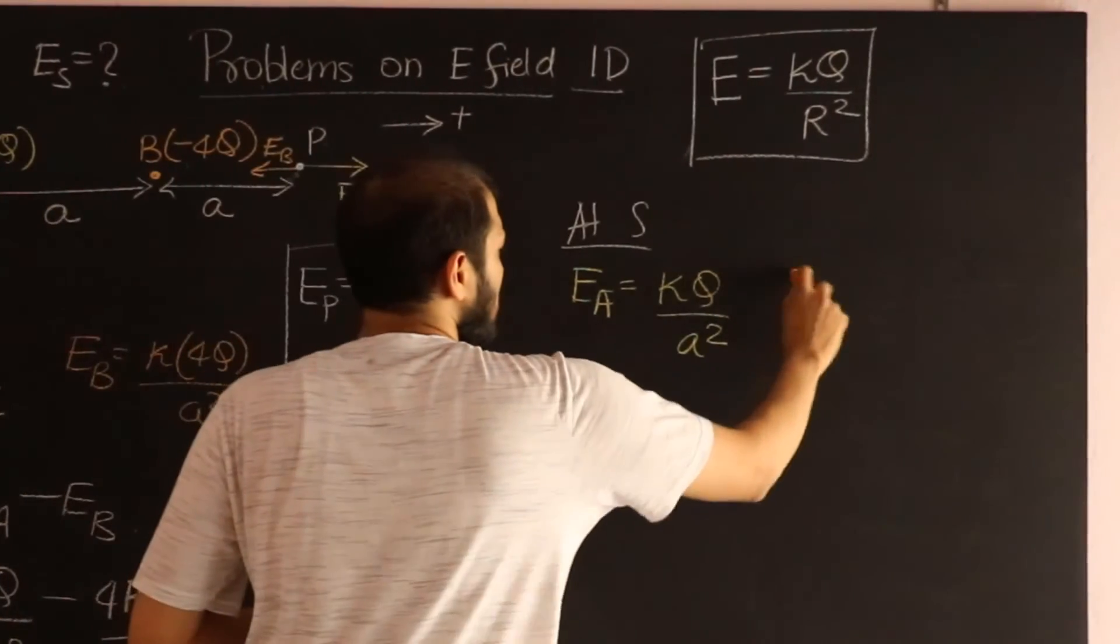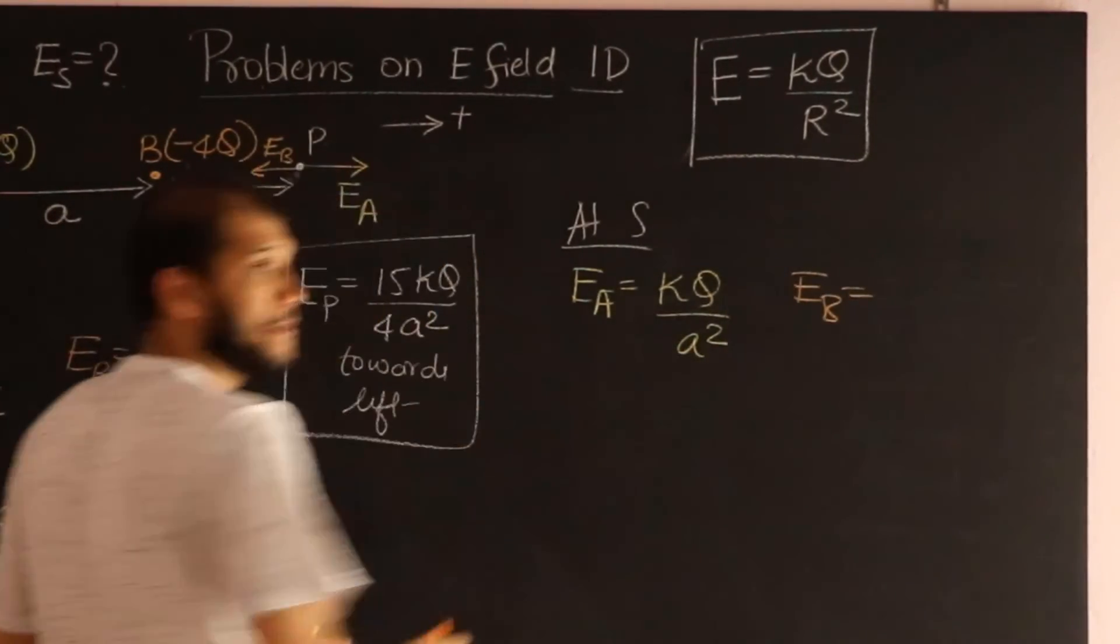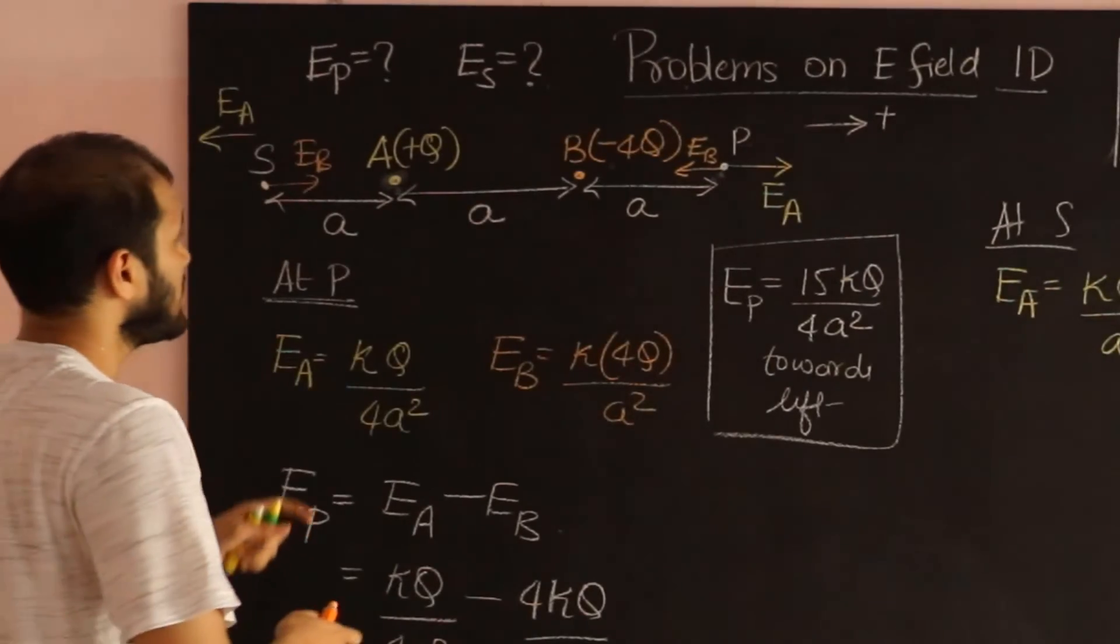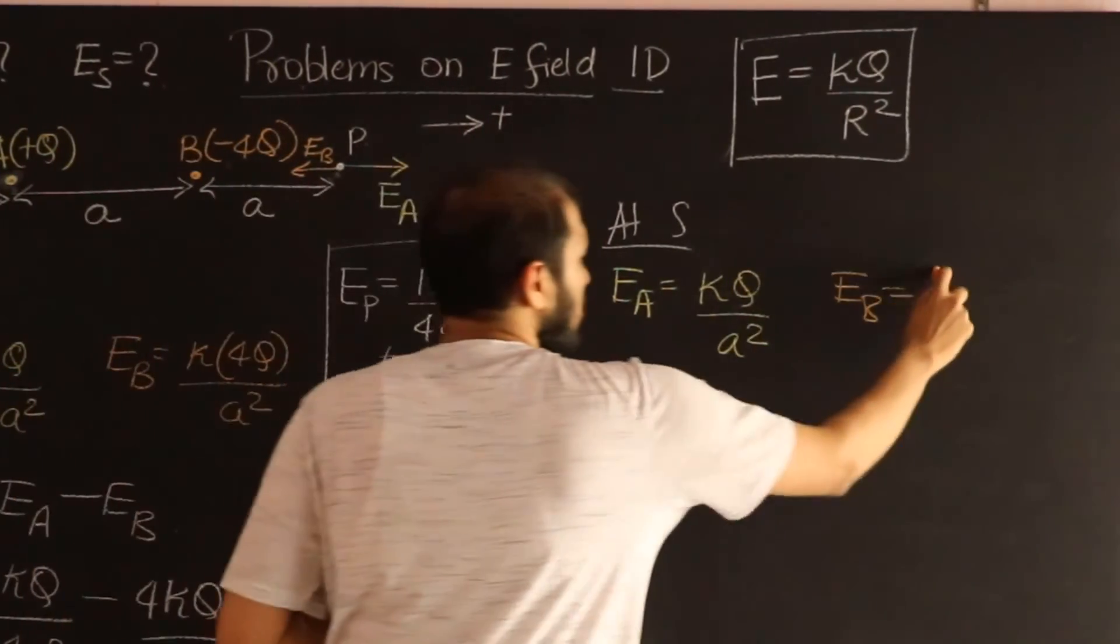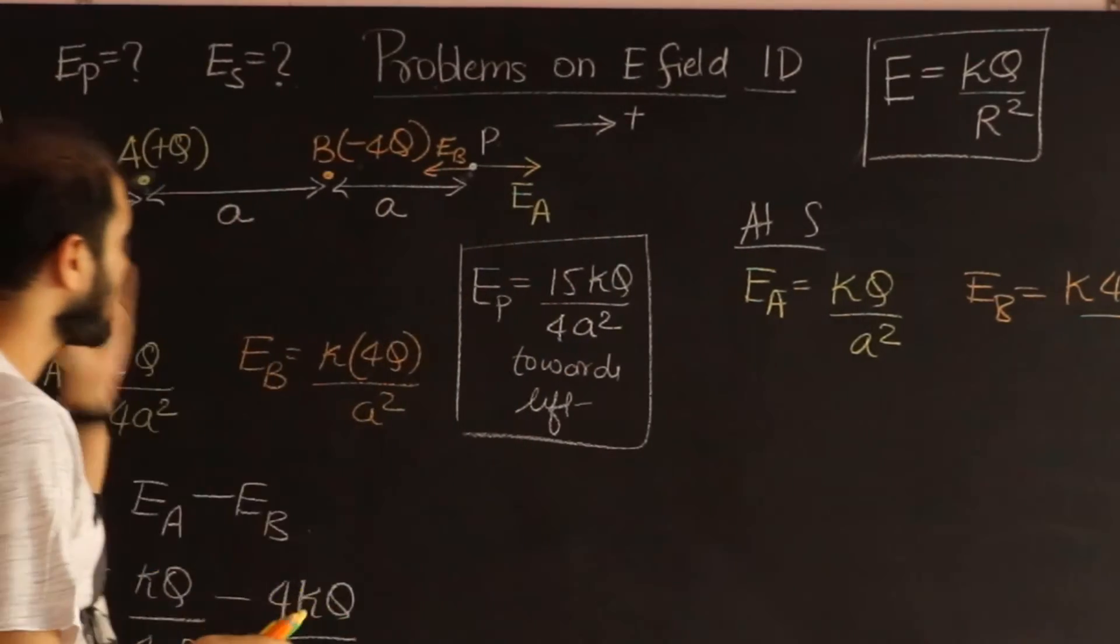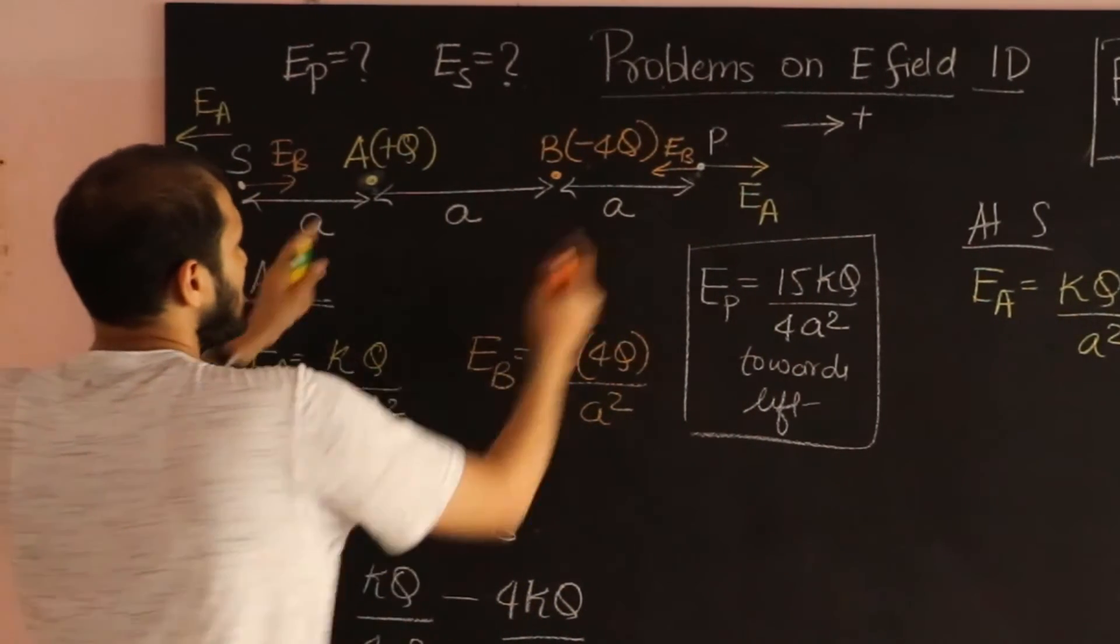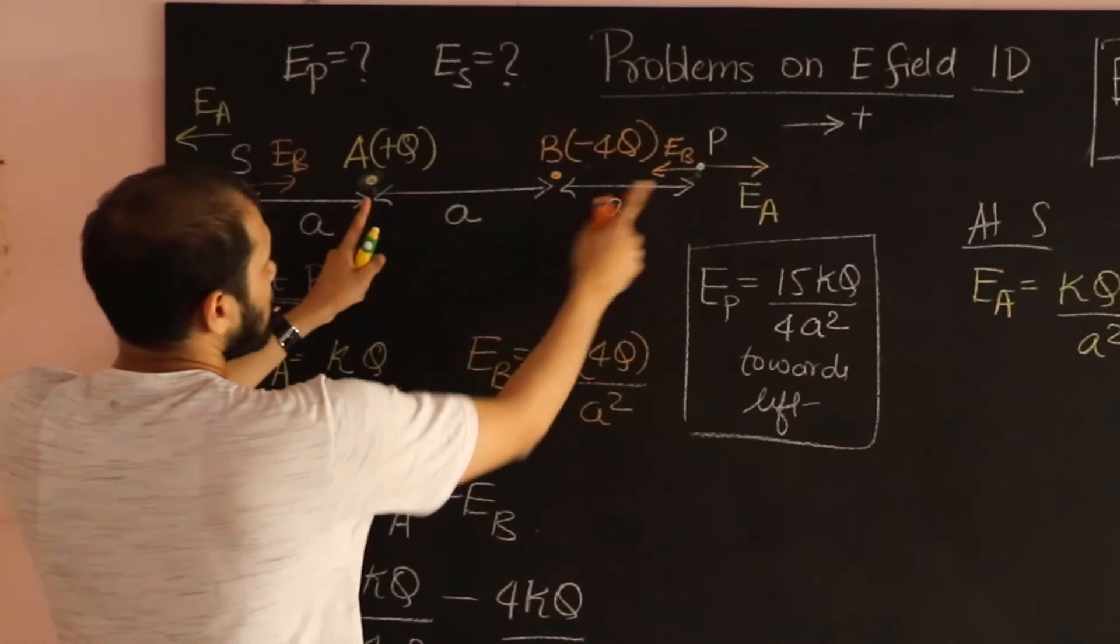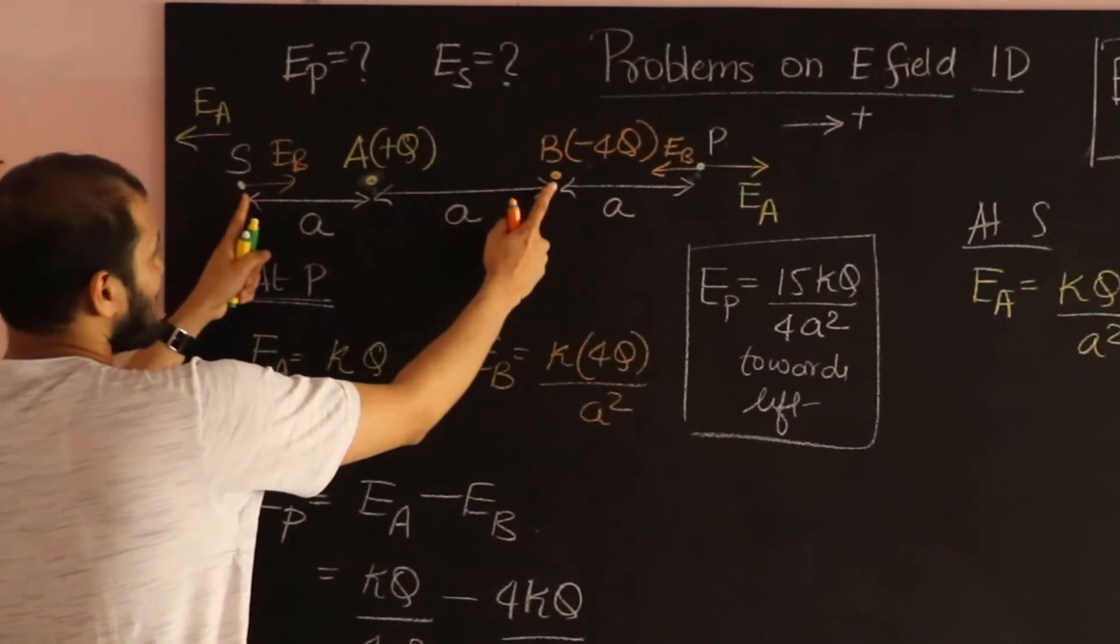And E_B in magnitude, I'm just calculating the magnitude, is going to be k into 4q, notice, no negative signs, just the magnitude, divide by the distance, no, not here, this distance,